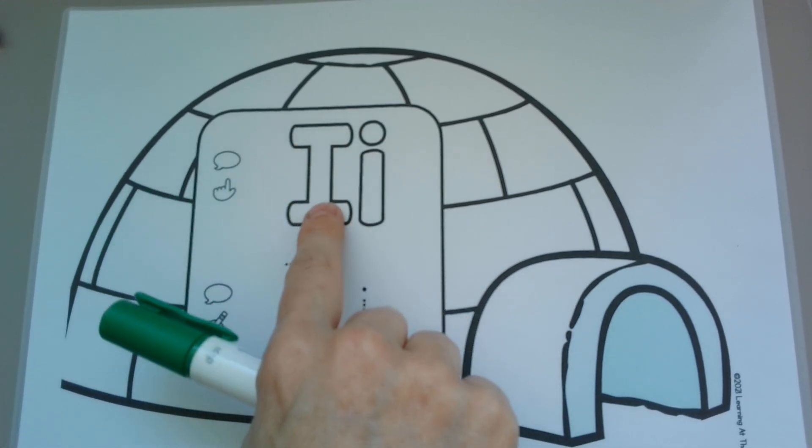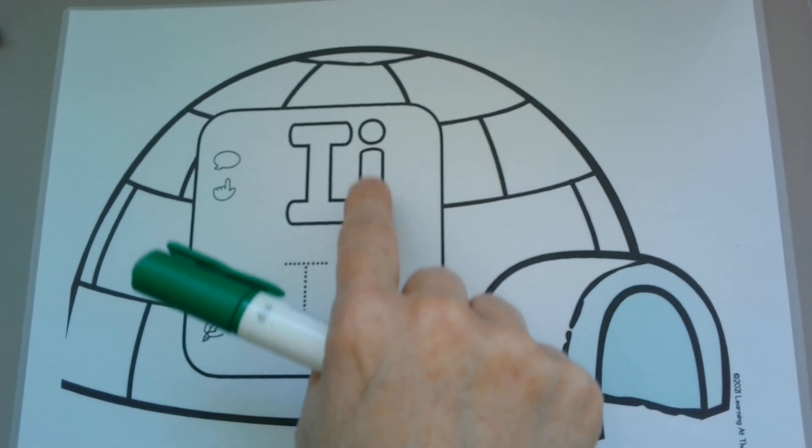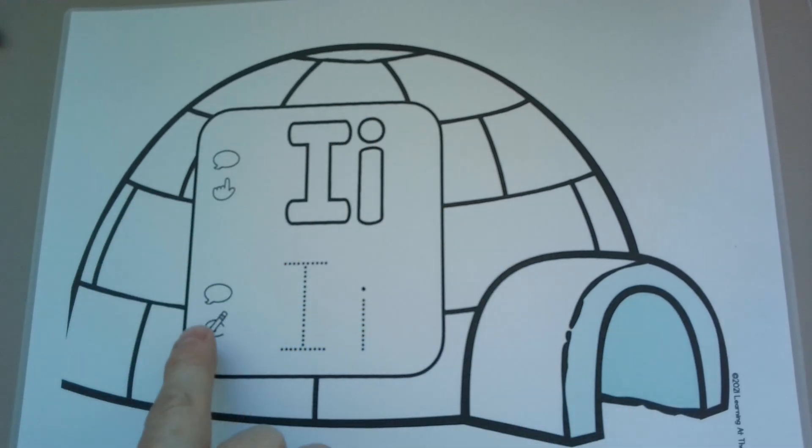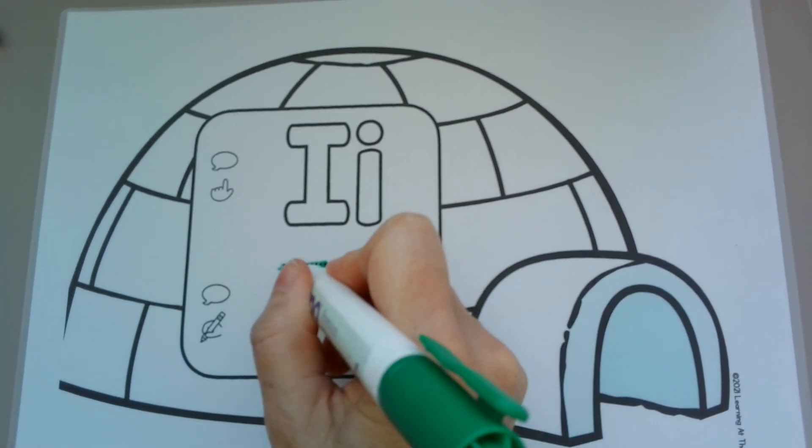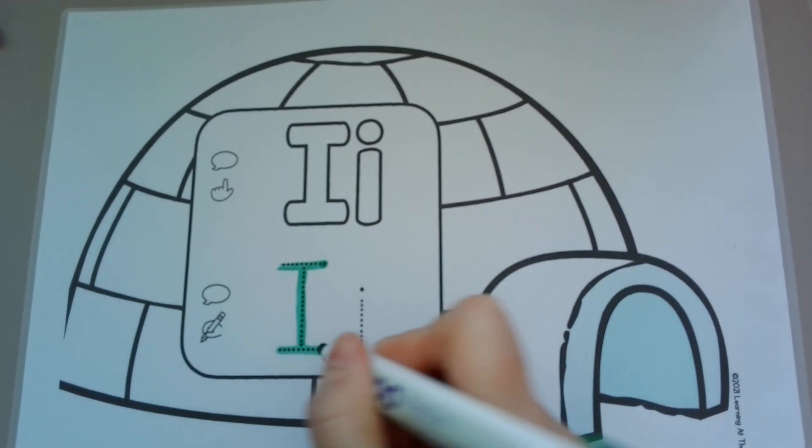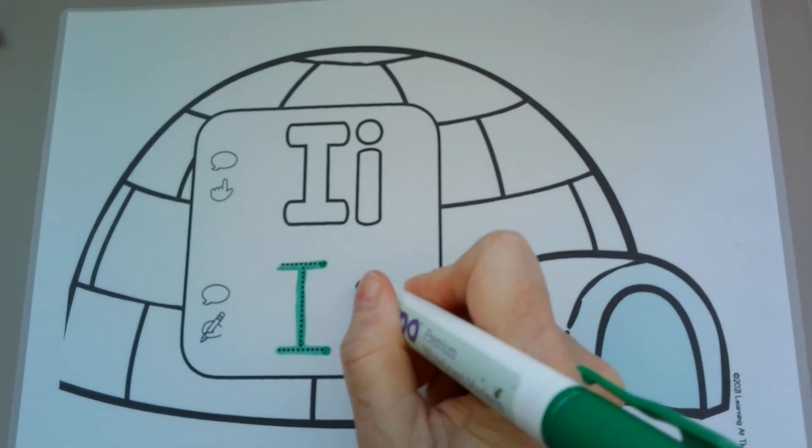We can talk about the name of the letter is I and the sound it makes is I. And then here we need to say it out loud and write it at the same time. So the name of the letter is I and the sound it makes is I.